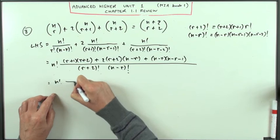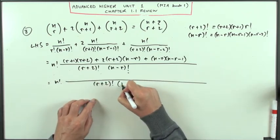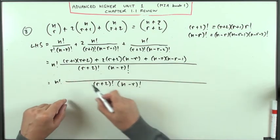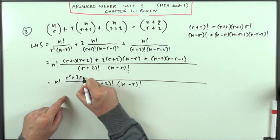Tidying this lot up then, having that out of it, I've got r plus two factorial, n minus r factorial, now multiply it all out. Well that bit's easy, r squared plus three r plus two.